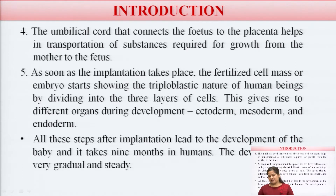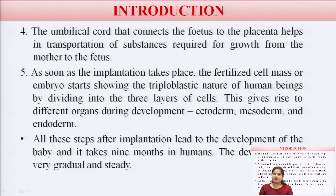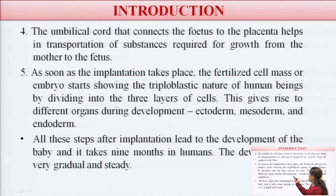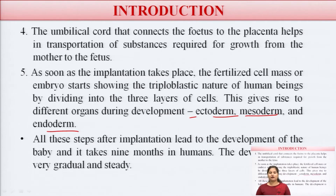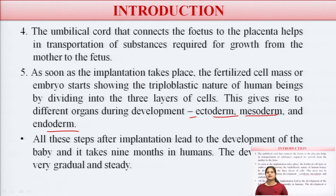As soon as implantation takes place, the fertilized cell mass or embryo starts showing a trioblastic nature by dividing into three layers — ectoderm, mesoderm, and endoderm — which give rise to organ differentiation during development. This entire process from implantation to full development takes nine months in humans.